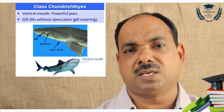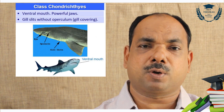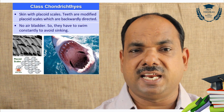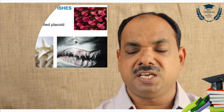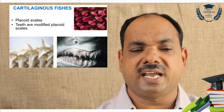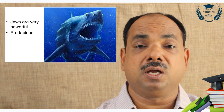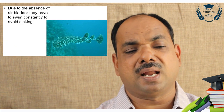Gills are present for branchial respiration but are not covered with the operculum. Teeth are placoid scales — placoid scale is the typical scale of Chondrichthyes. They have a trident-shaped spine and rhomboid plate. Teeth are modified placoid scales. They are exclusively marine with very powerful jaws and are predaceous.